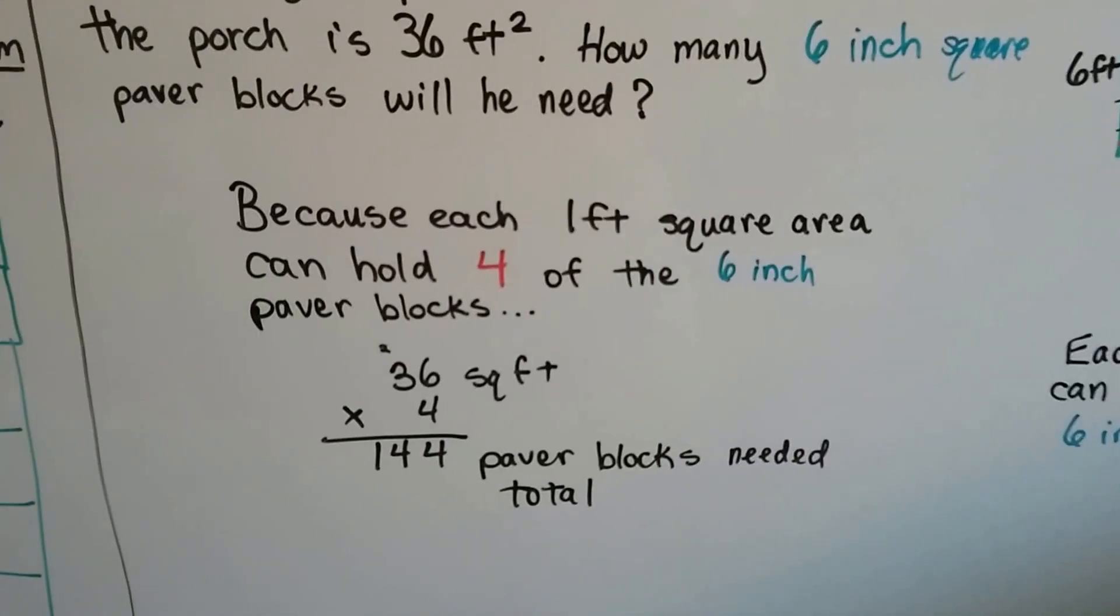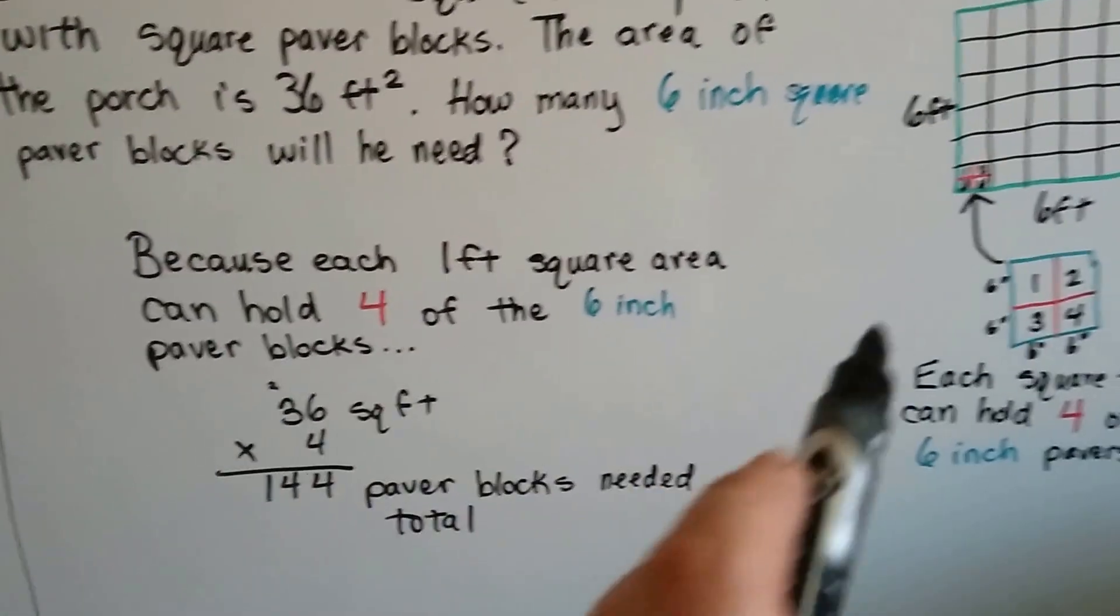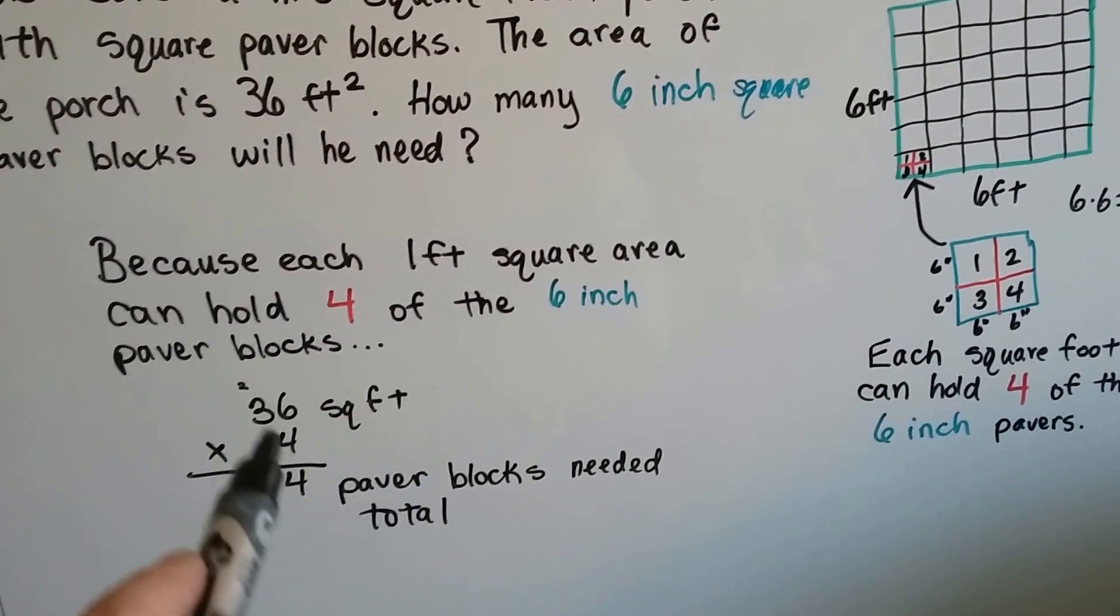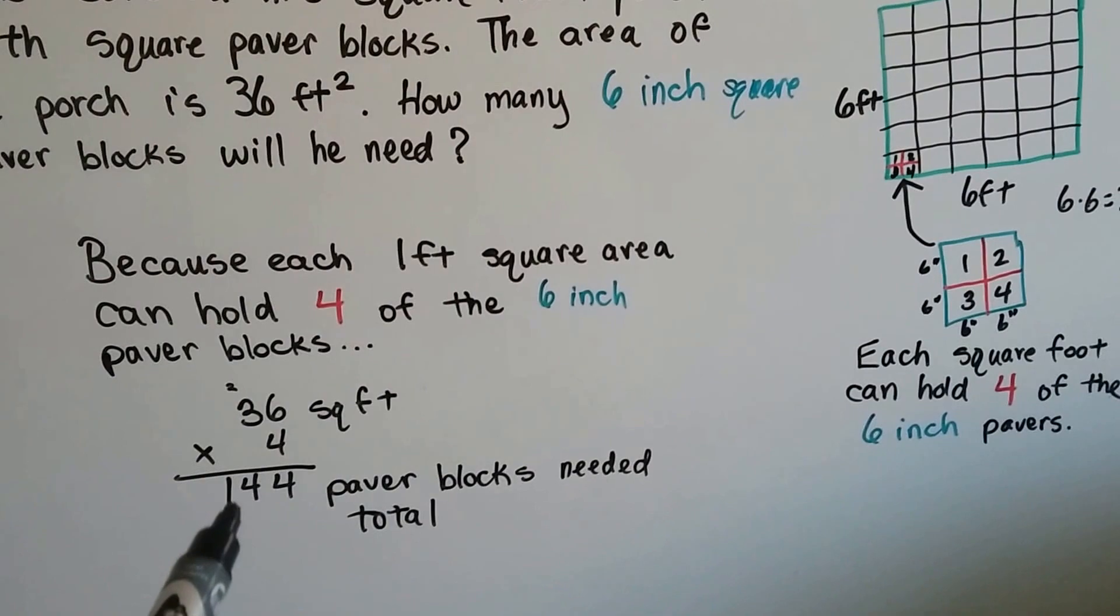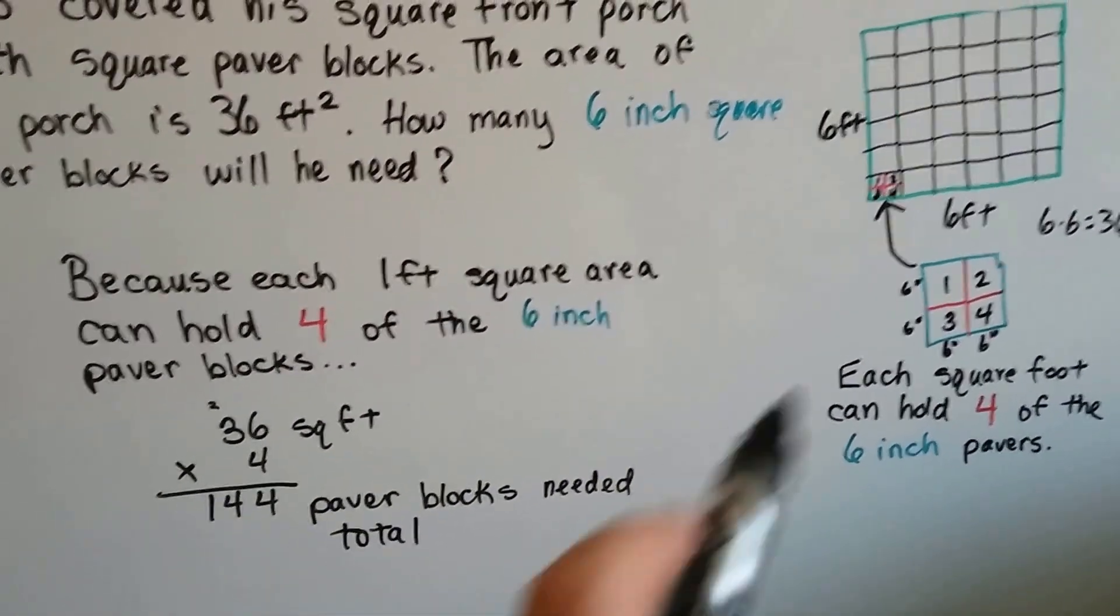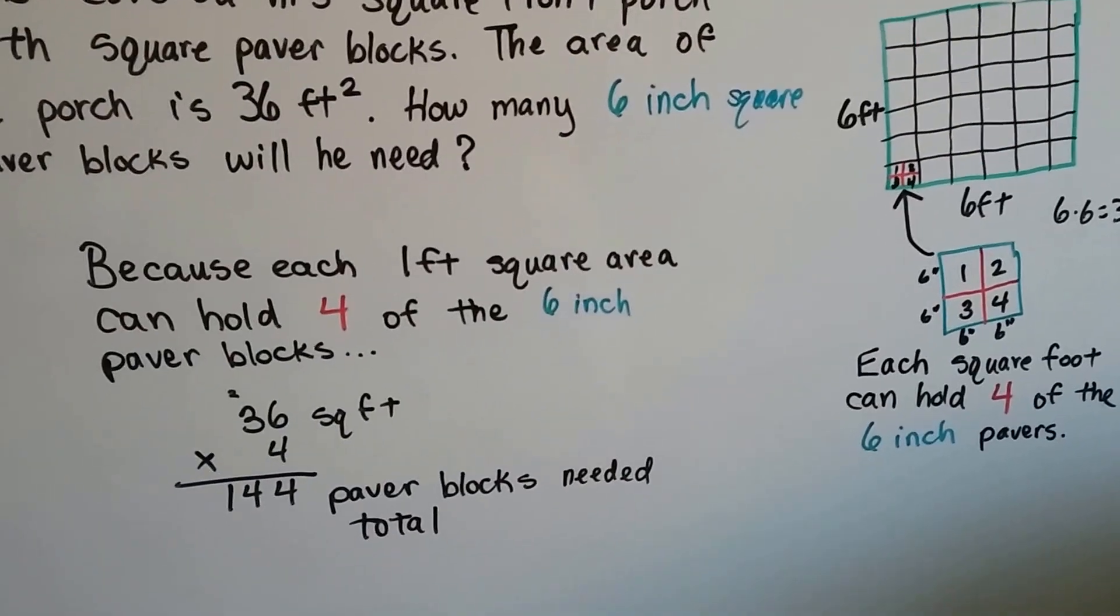So because each one foot square area can hold four of those 6 inch paver blocks, he multiplied the 36 foot squared by four and came up with 144 paver blocks that he would need to pave his front porch.